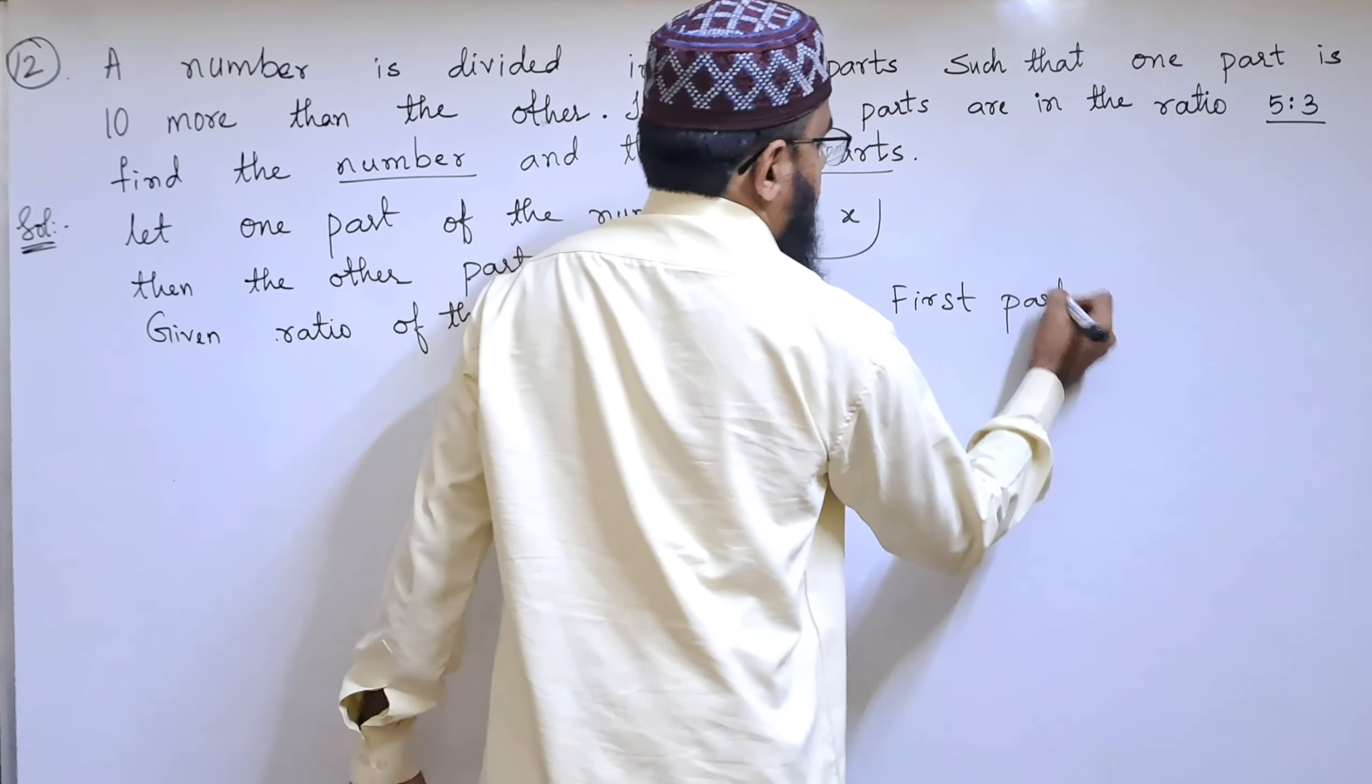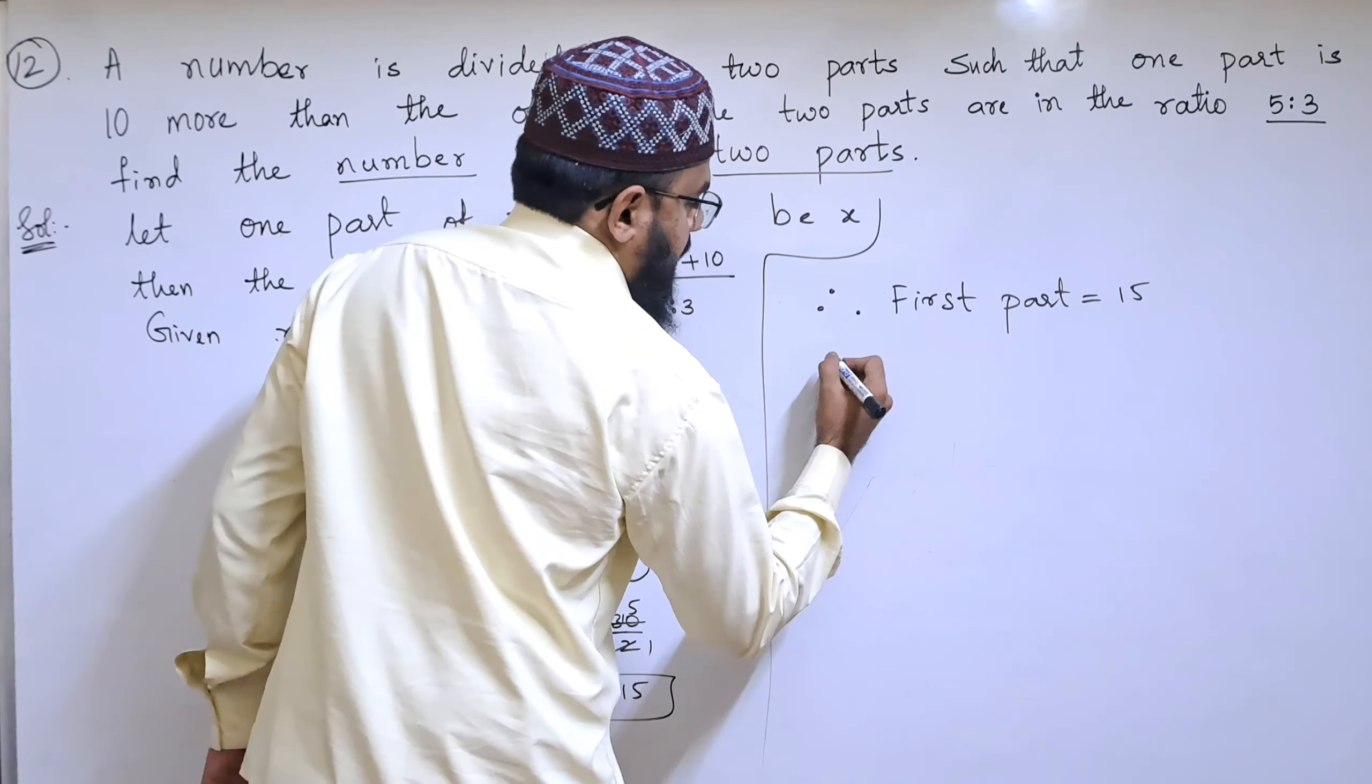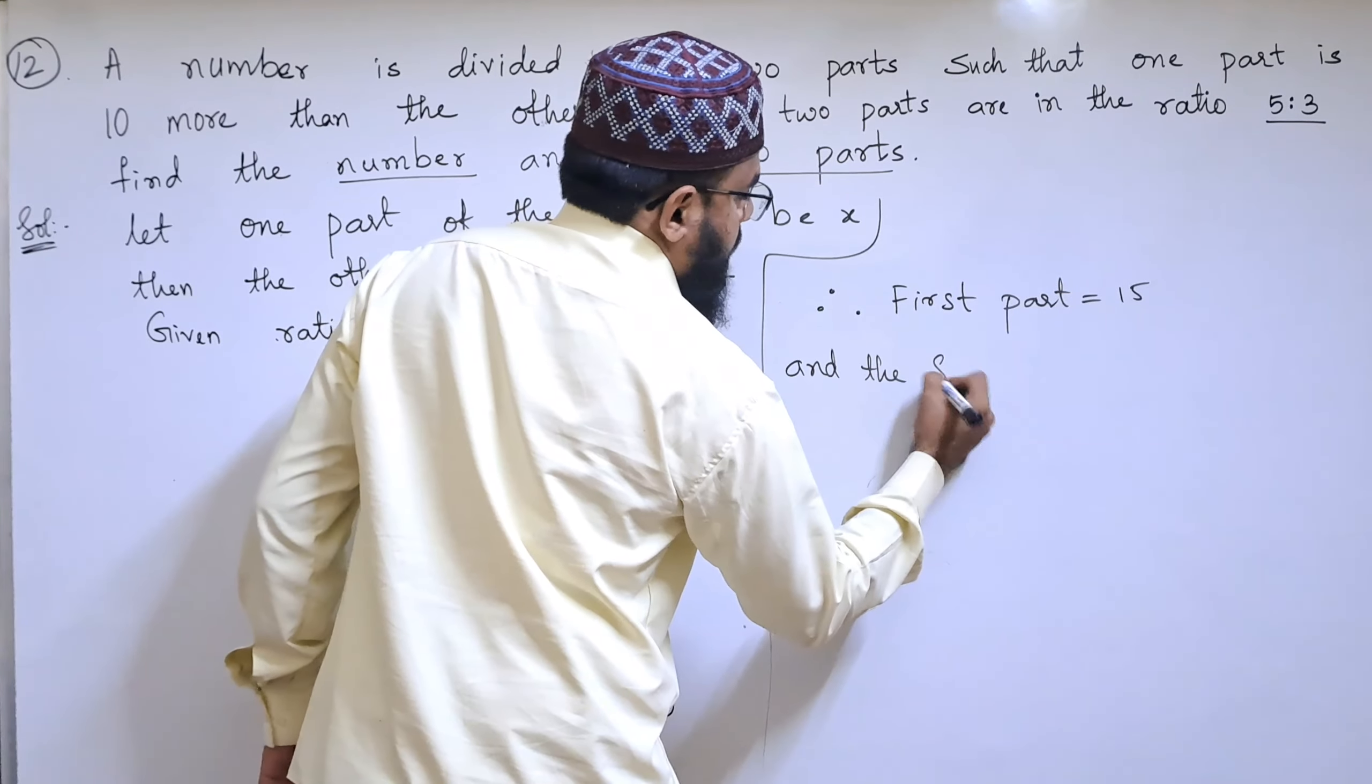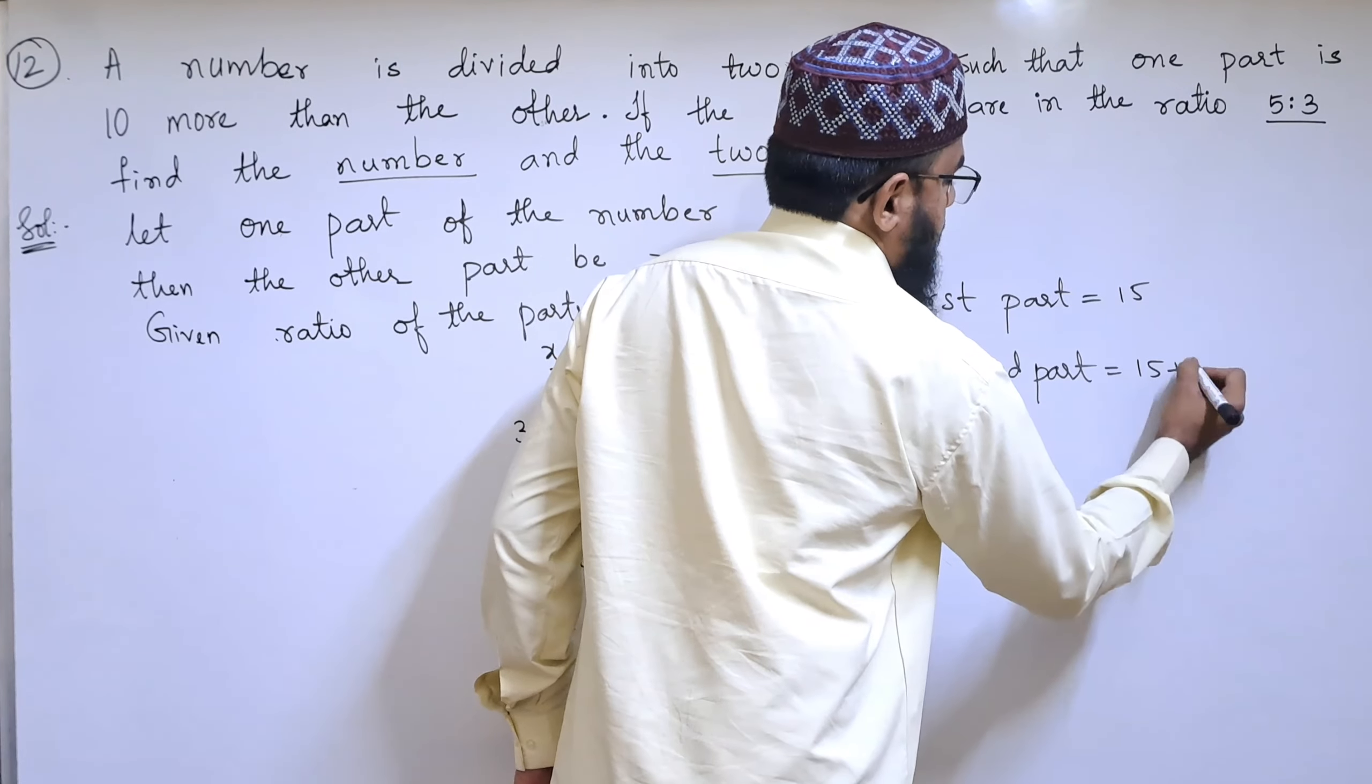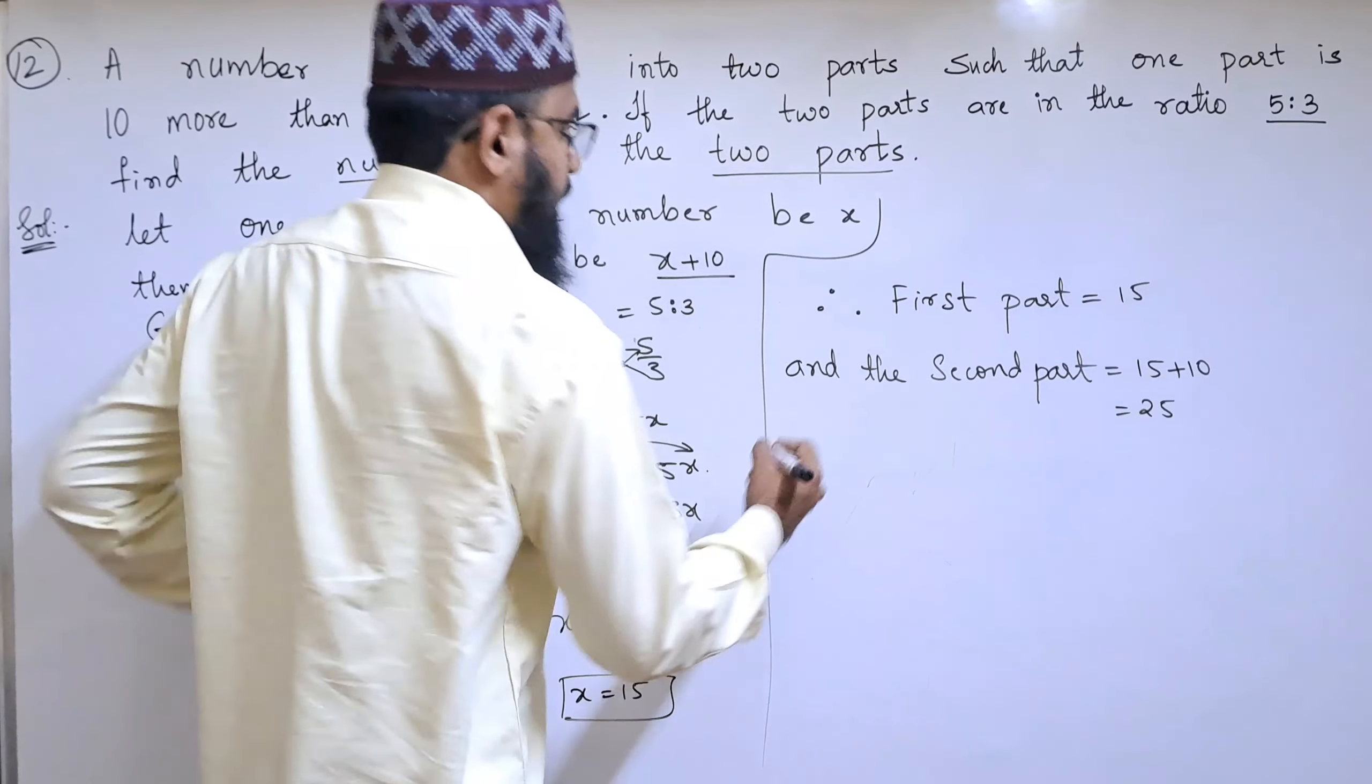Therefore x equals 15. This is the first part. The second part is 15 plus 10, which equals 25.